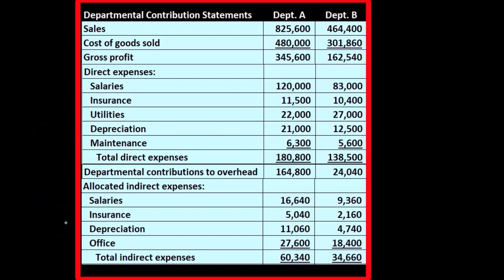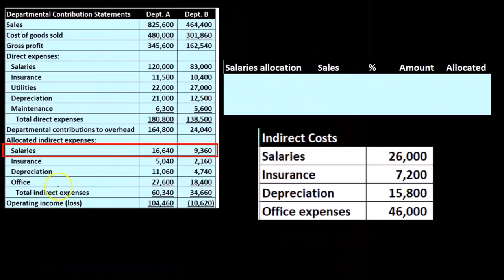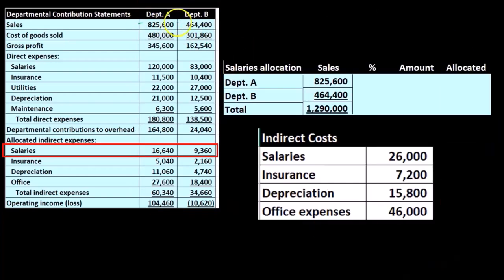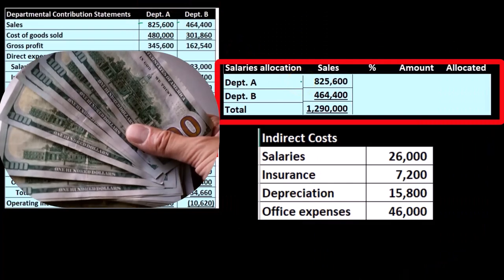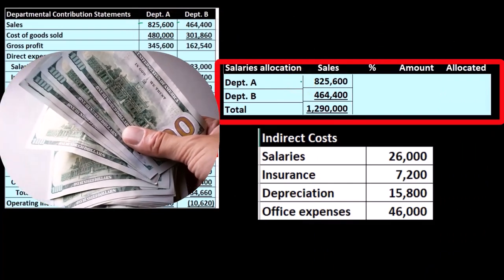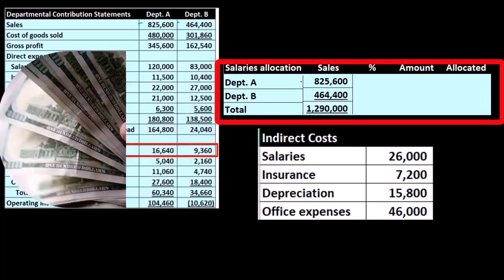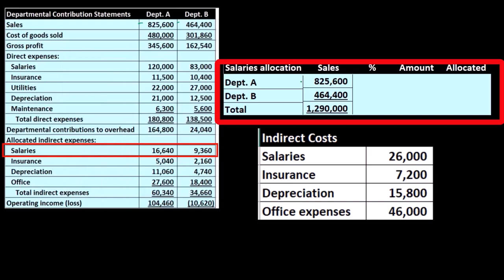Let's look into those allocation methods. First, we'll take a look at salaries. We're concentrating on salaries and we're going to compare Department A and Department B. We're taking the sales numbers as the activity base — not because salaries relate directly to sales, but simply because we decided sales would be the activity base. We'll use sales to come up with a ratio or percentage that we can then apply to allocate the salary cost between the two departments.